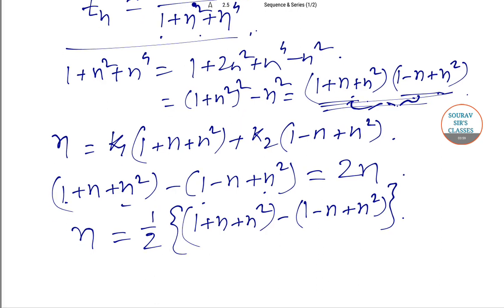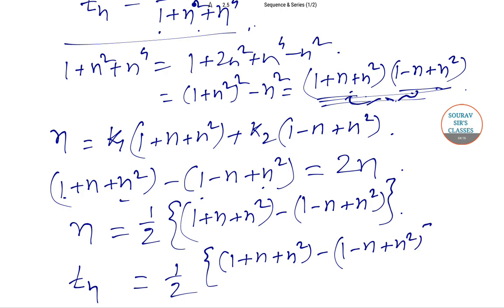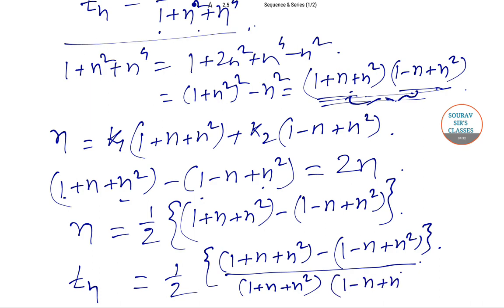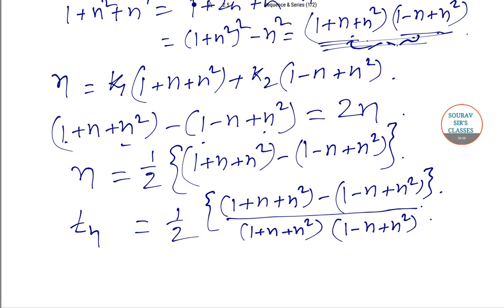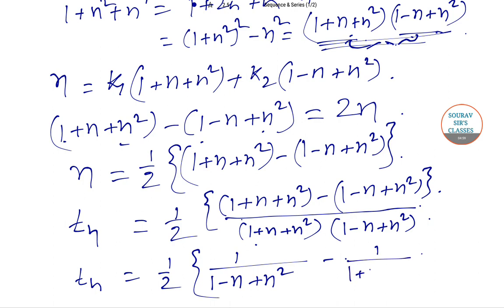So we can write Tₙ by replacing n with half of [(1+n+n²) − (1−n+n²)], divided by (1+n+n²)(1−n+n²). The (1+n+n²) cancels from the first part giving 1/(1−n+n²), and (1−n+n²) cancels from the second part giving 1/(1+n+n²). Therefore Tₙ = ½[1/(1−n+n²) − 1/(1+n+n²)].